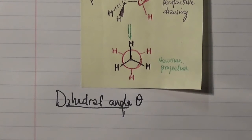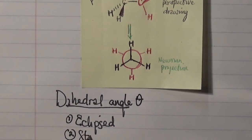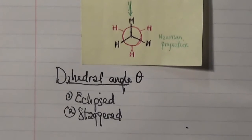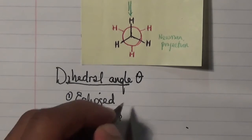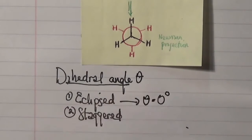These two different conformations include the following: eclipsed and staggered. Now looking at the eclipsed conformation, it is known to be a form with a dihedral angle of zero degrees.